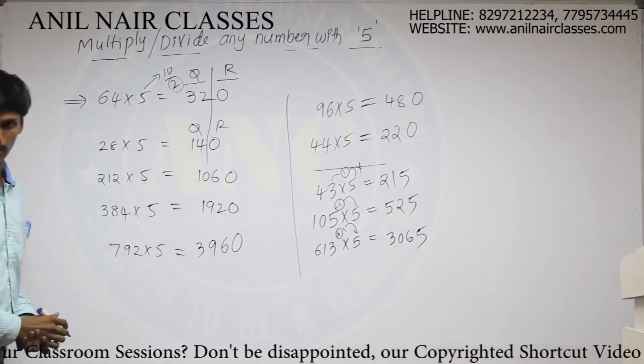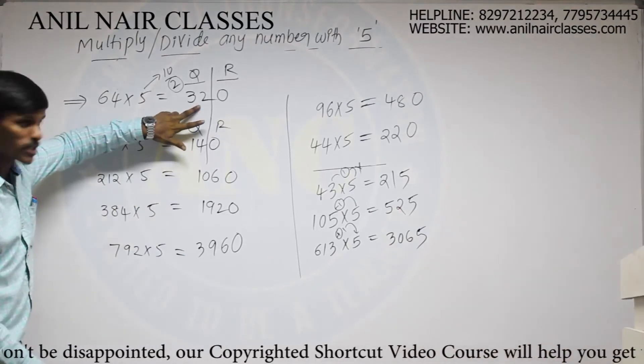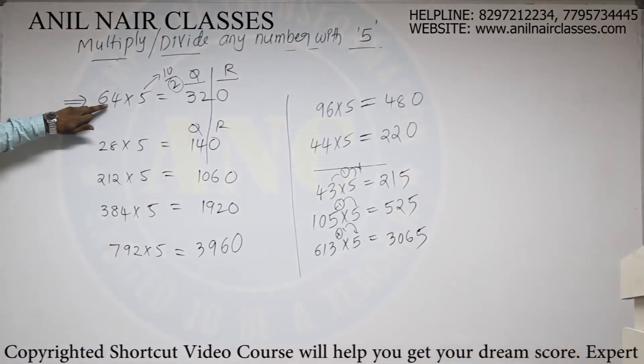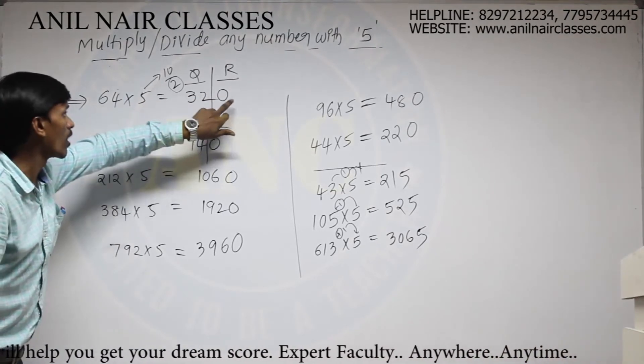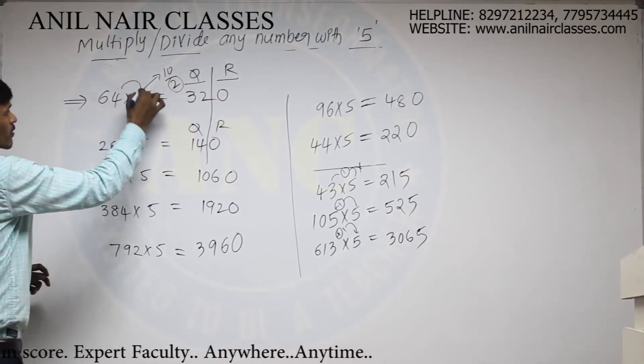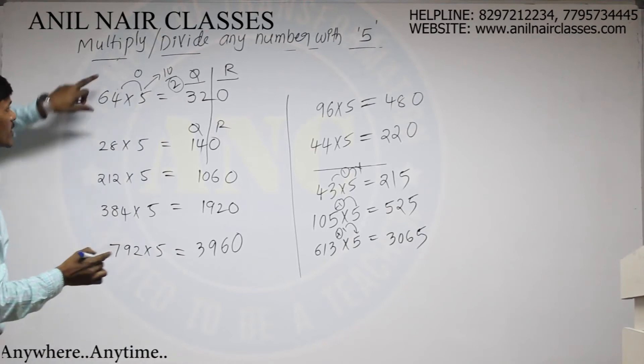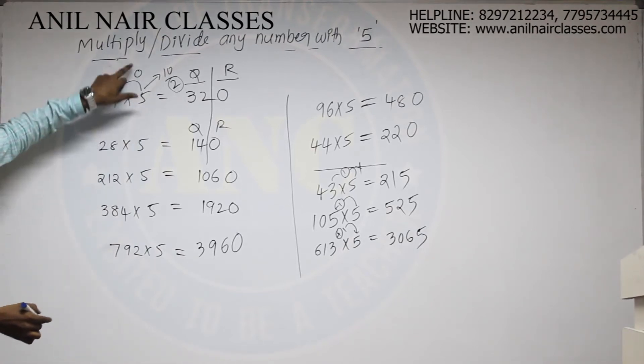Here also, coefficient value, remainder value. So either this coefficient will be the result of dividing this number with 2. Remainder will be the multiplication of remainder with 5. Here, in this case, remainder was 0, 5, 0, 0.